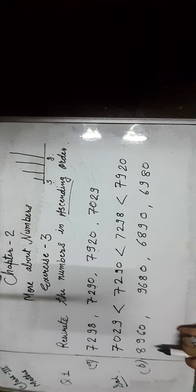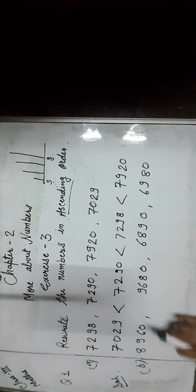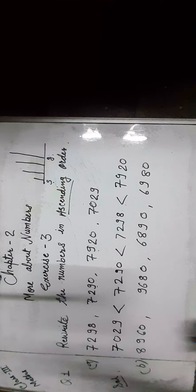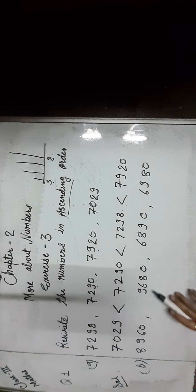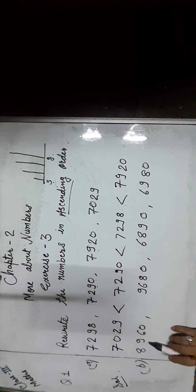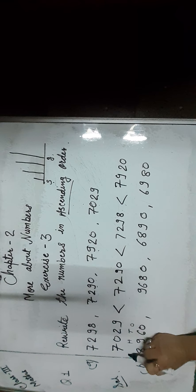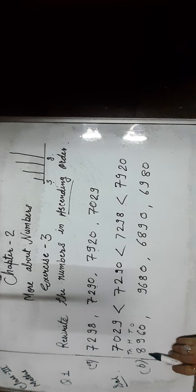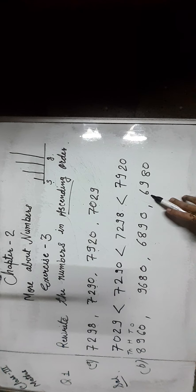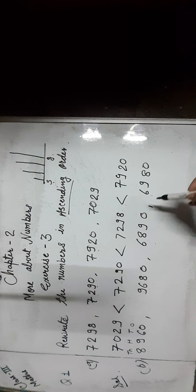Now next question. First we check the number of digits — all numbers have 4 digits. Then we find out the place value of each digit: 1s, 10s, 100s, and 1000s. So first we compare the 1000s place digit, which is 8, 9, 6, 6.